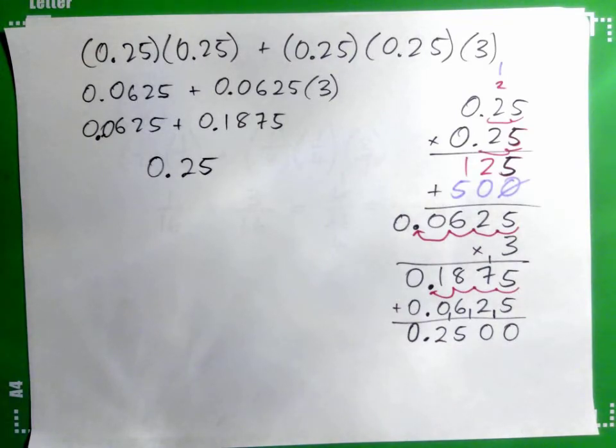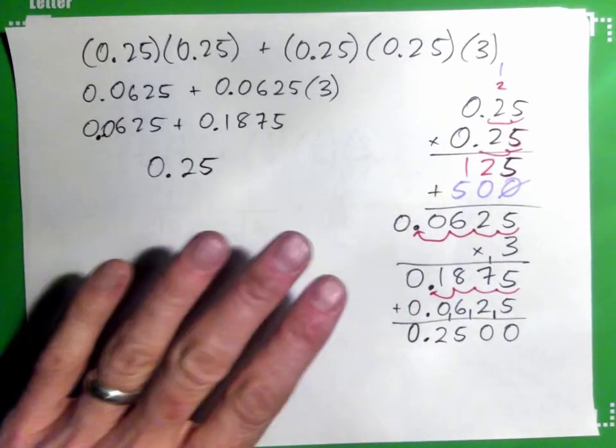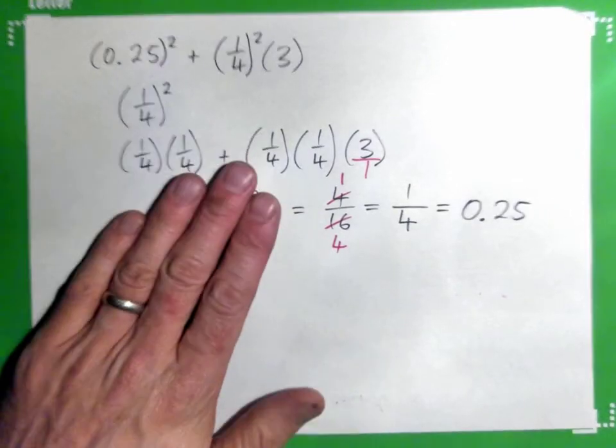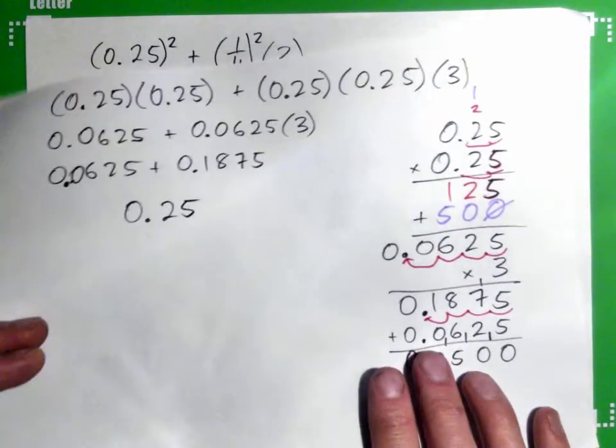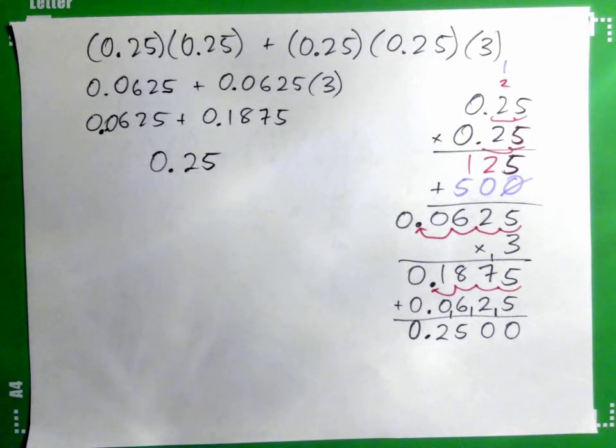So, yeah, fun times. This is the decimal way. That was the fraction way. My vote is the fraction way. In this case, it seemed to look nicer. But you could do it that way as well if you wanted to. Yep. Fun times.